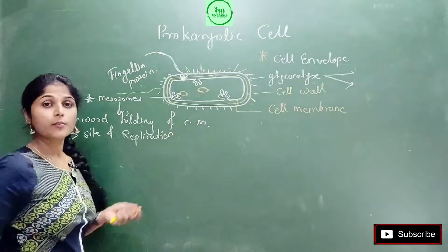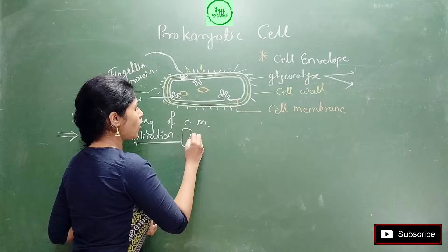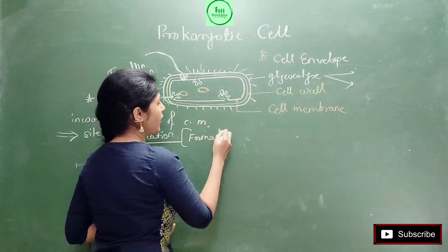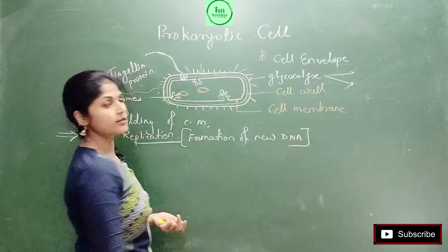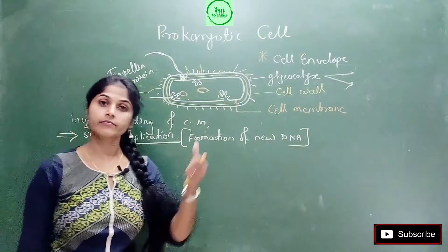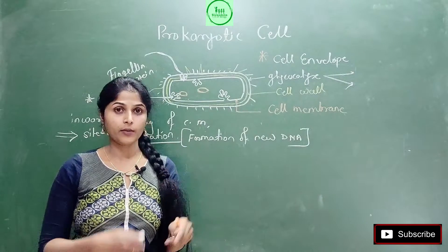So we can say this mesosome is important, or it is the site of replication. But what is meant by replication? Replication means formation of new DNA. The process of formation of new DNA is called replication. Where does it happen? On mesosome. In our cell where does it happen? In nucleus.